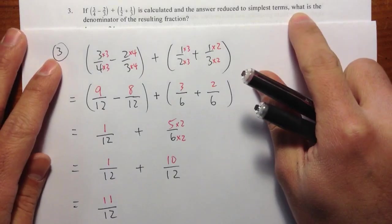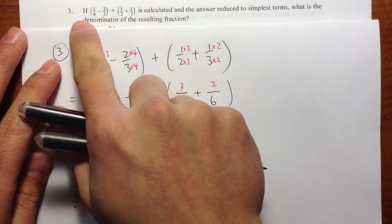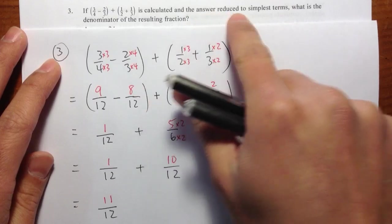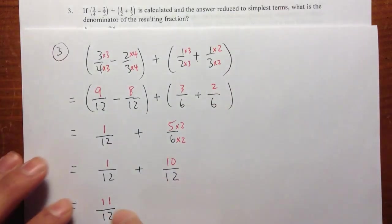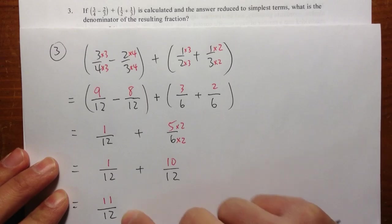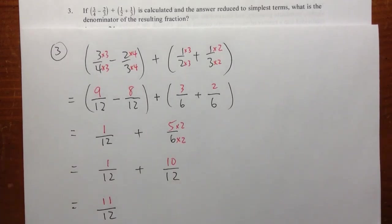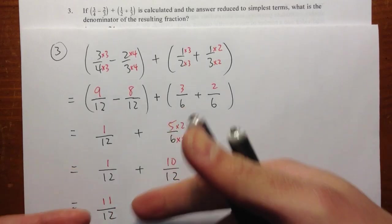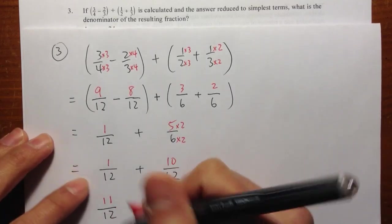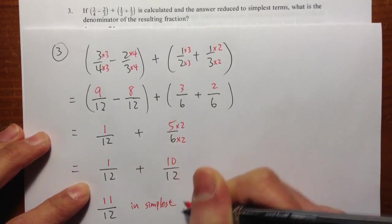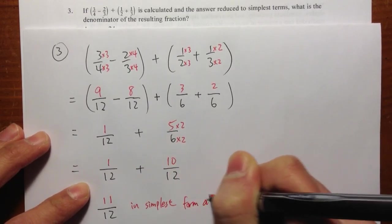But notice, pay attention to the question. It says that if you calculate these fractions, answer reduced to the simplest form, and take a look, 11 over 12, is it possible to find a number that goes into 11 and 12 evenly? The answer is no to that. So this is the simplest form. 11 over 12, it's the simplest form. I want to make a note: in simplest form already.